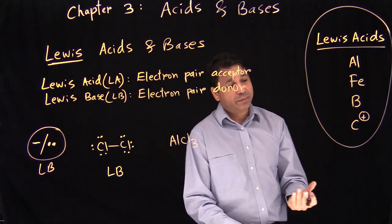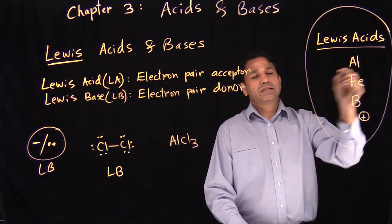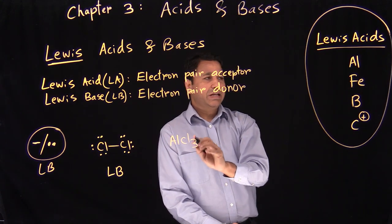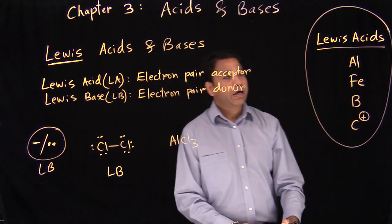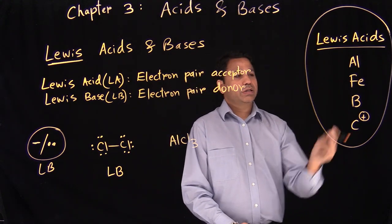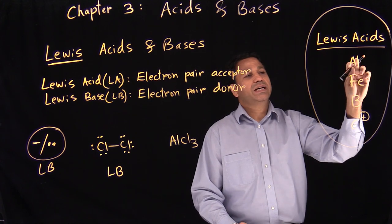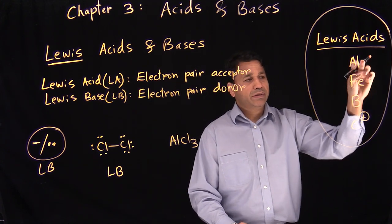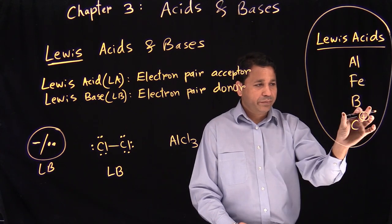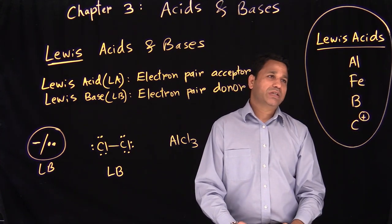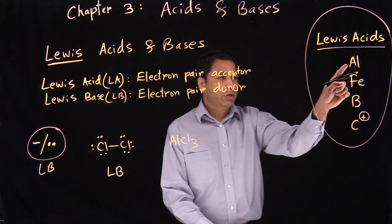Aluminum cannot stay as just aluminum by itself because aluminum can form three bonds, so it is in the form of AlCl3 or AlBr3. The same is true for iron — it cannot be just by itself; they are attached to something else. But what you're focusing on is these elements: do you have aluminum, iron, boron, or carbon plus? Anytime you see any of these, they are your Lewis acids — they will accept the electron pair.